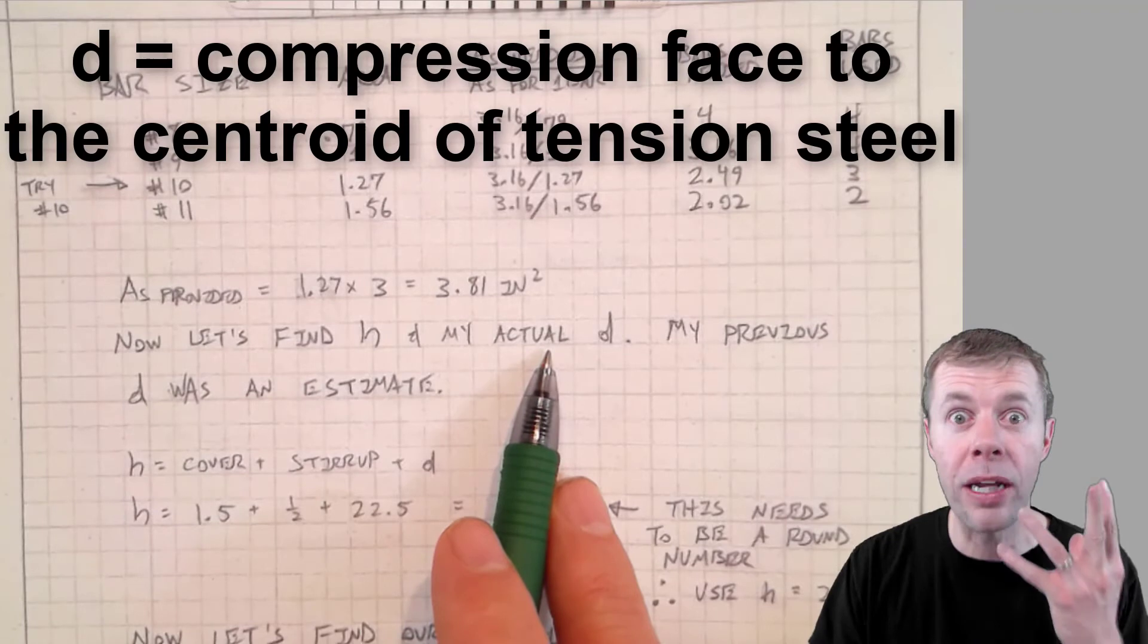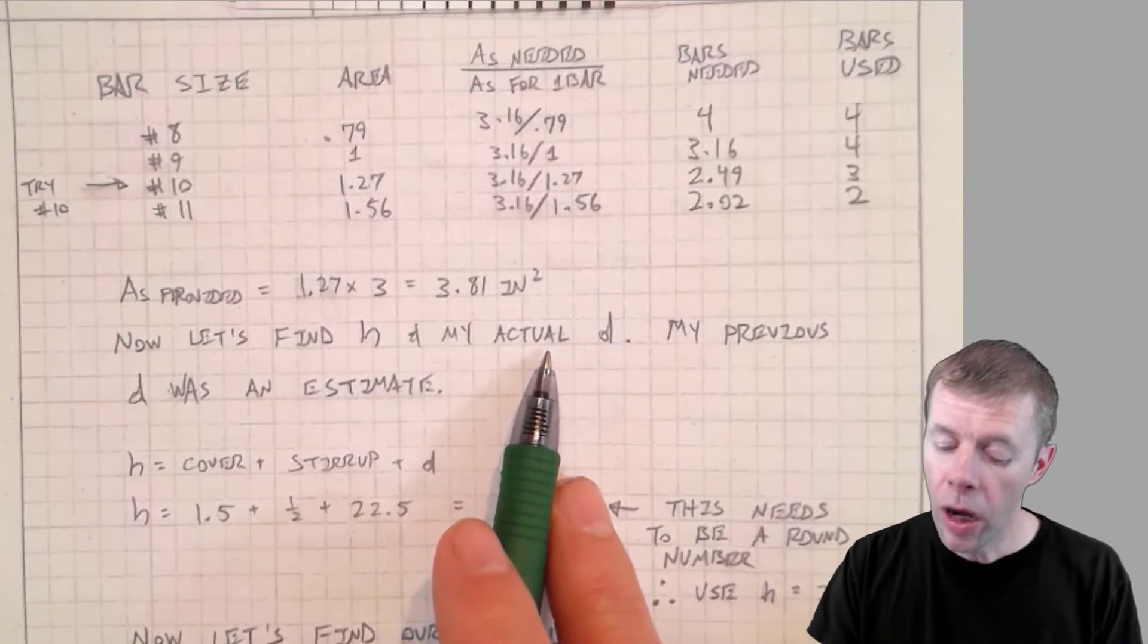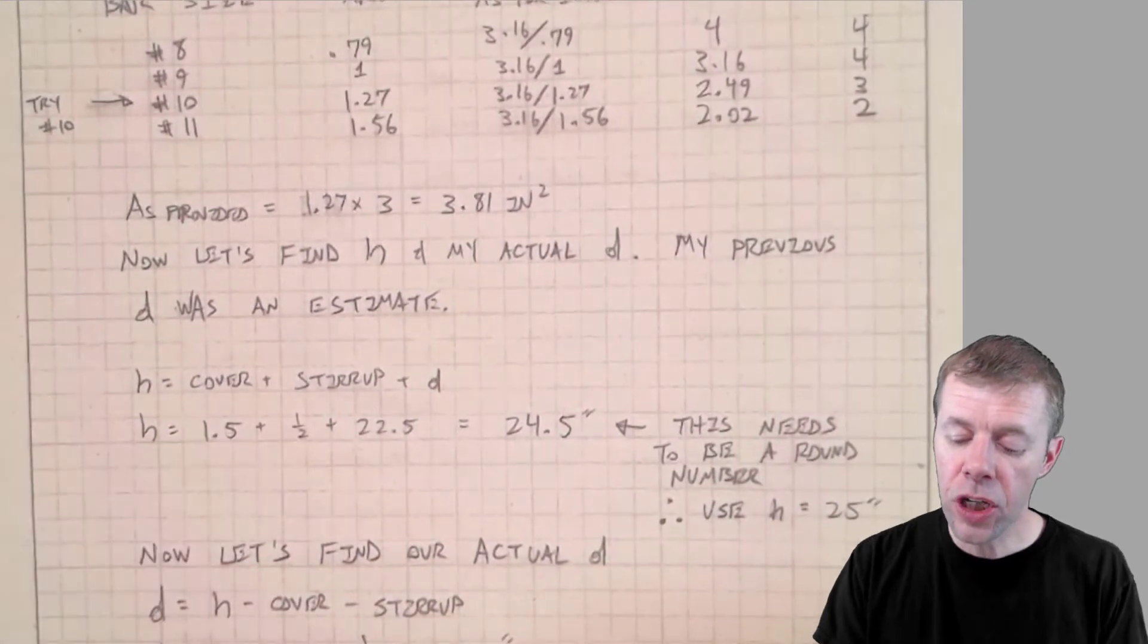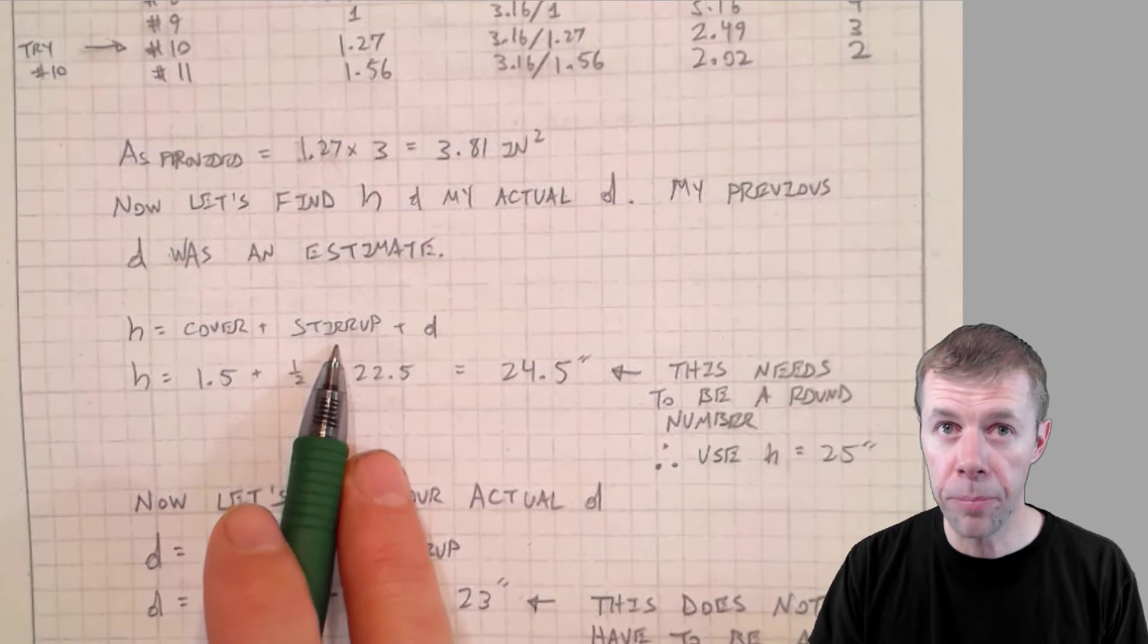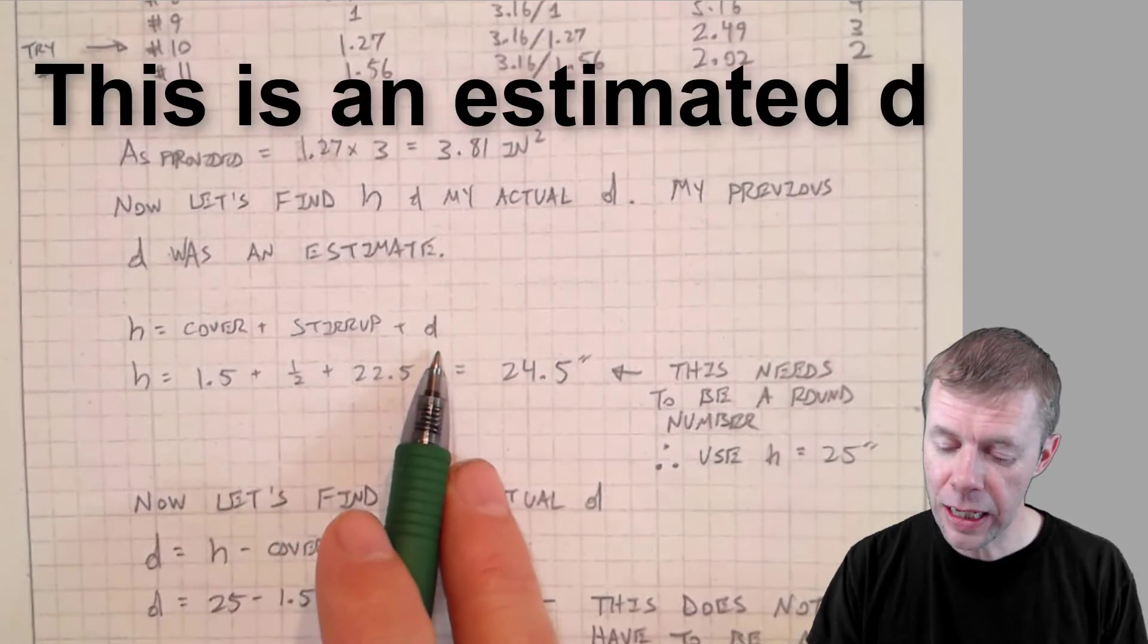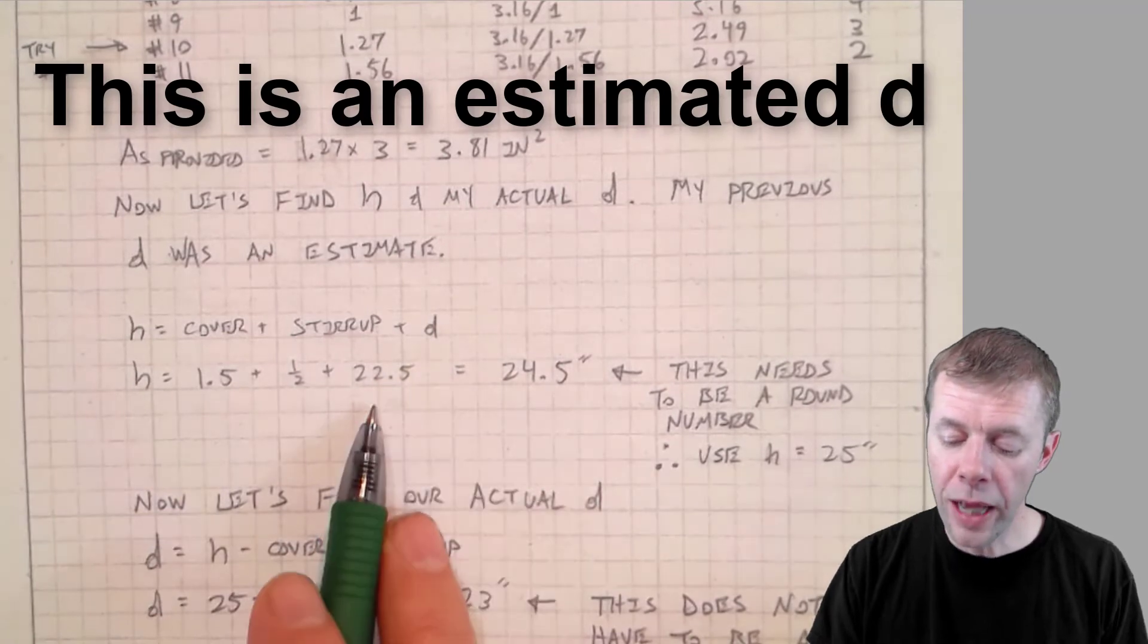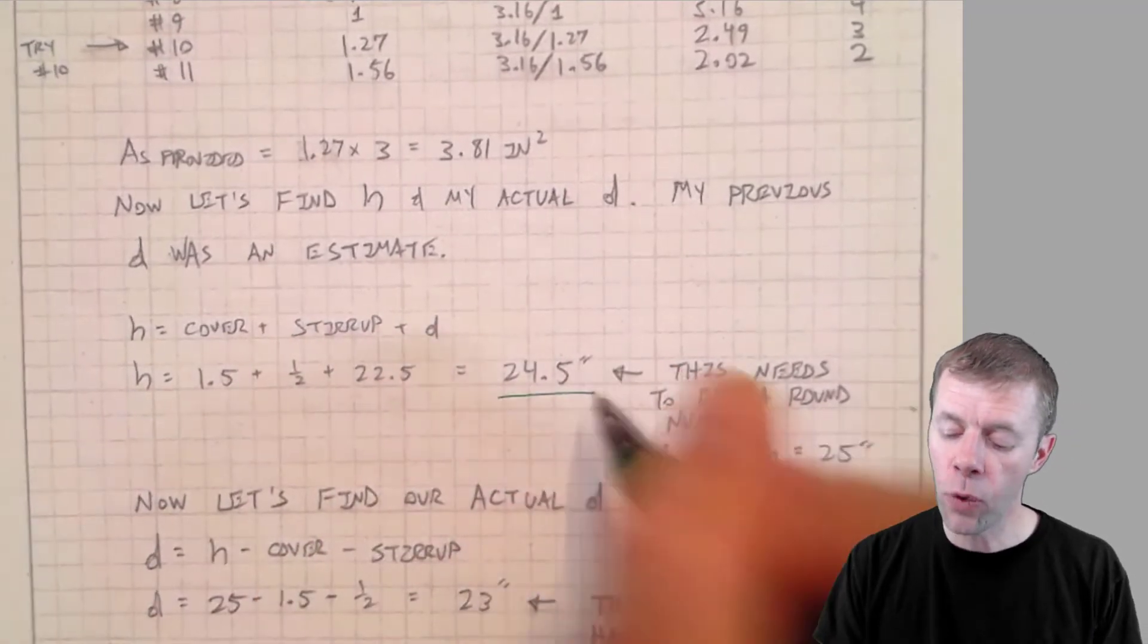Now let's find my H and my actual D. Because I had some guesses before, but now I get to figure out what I really have. Now I'm going to take my H. That is the cover. It's an internal exposure. So it's one and a half inches. Plus my stirrup, which is half an inch. Plus my D, that was my old estimate, 22 and a half.